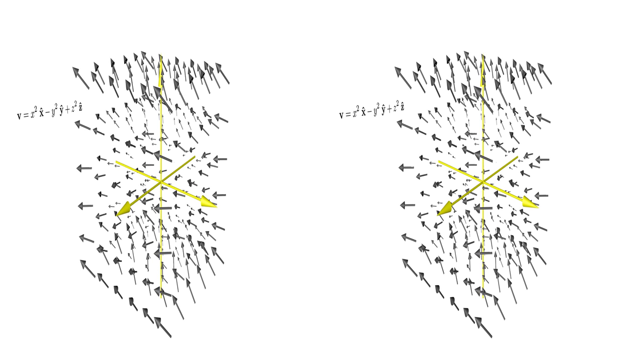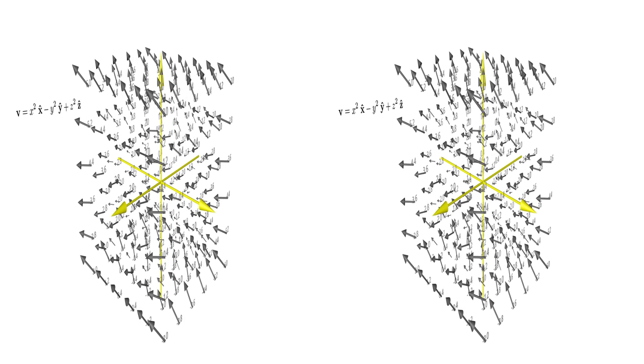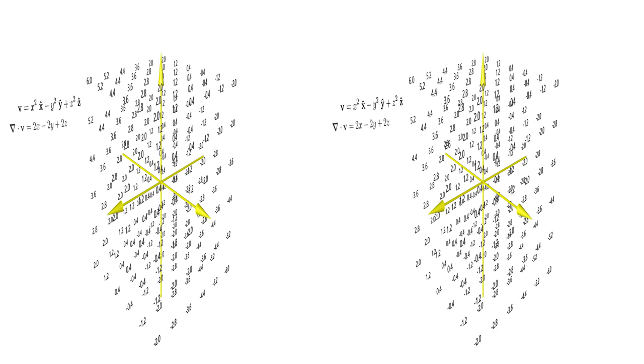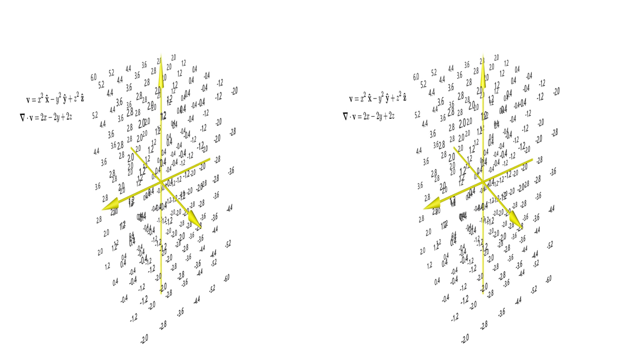Starting with the divergence of a vector field, we can interpret this resulting scalar field as the extent to which a particular point is a source or a sink of the vector field.